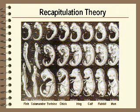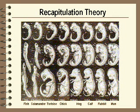What he did was he had some drawings made of embryos. This, for example, is the so-called embryo of the fish, this is the salamander, tortoise, chicken, hog, calf, rabbit, man.